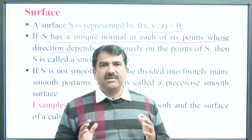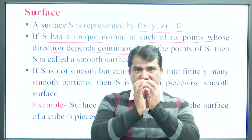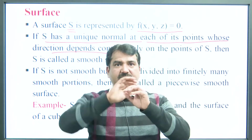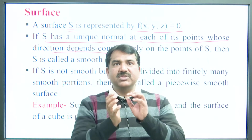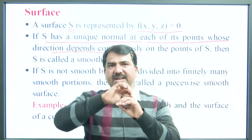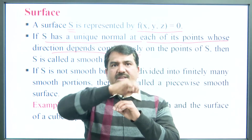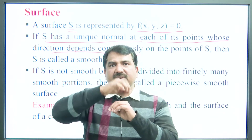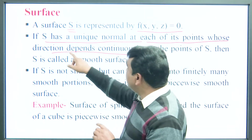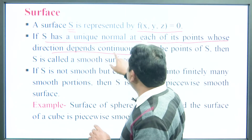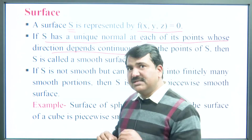For example, if we consider the sphere, then the surface of the sphere is a smooth surface because at each point the normal is continuous and its direction depends continuously on the points of S.